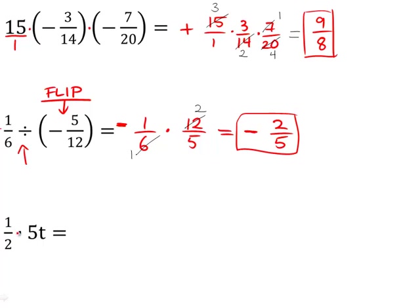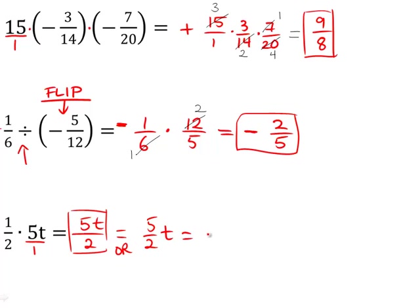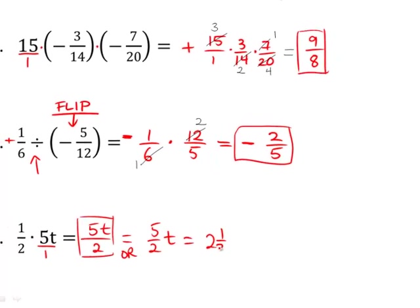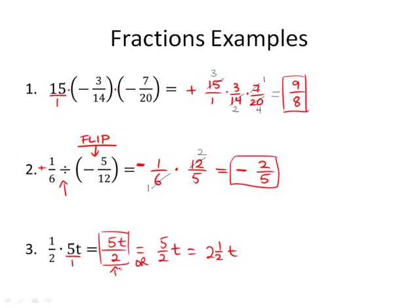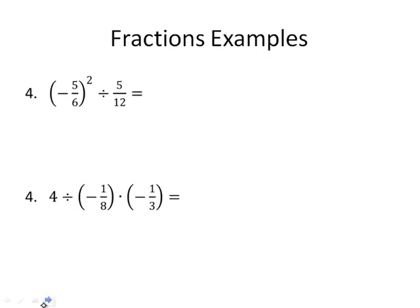Let's look at one with a variable. It's a multiplication question, so we can write this over 1. We want to look for any common factors between the numerator and denominator — in this case, I don't think anything simplifies. So let's go on and multiply the numerators and then the denominators: 1 times 5t is 5t, 2 times 1 is 2. And you're done. You could also write this as 5 halves t, or as 2 and a half t, but 5t over 2 is fine.